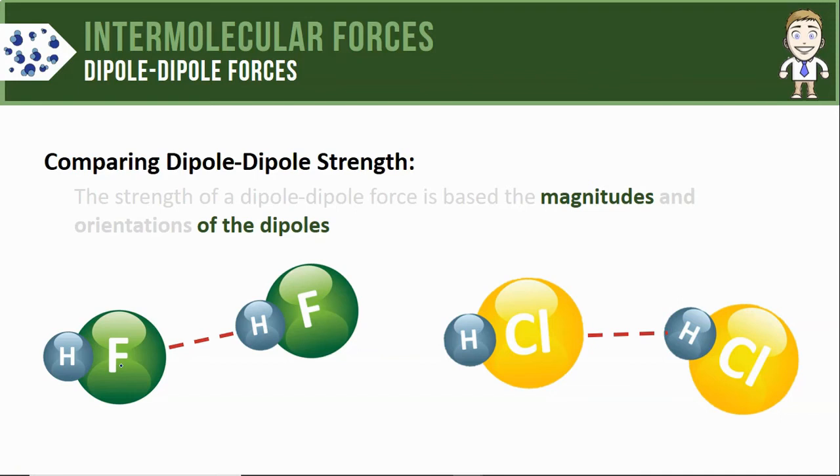We could go to a periodic table and look up the actual electronegativity values but here we don't really need to because the HF molecule has the atom fluorine. And fluorine has the highest electronegativity out of any atom on the periodic table.